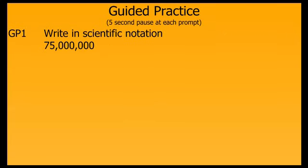Now for our guided practice section. We're going to work through some problems together — you do not need to write down these problems, just step through them with me. At each step I'll prompt you with the question you should be asking yourself, pause for about 5 seconds, then show you. For this first problem, we're trying to write the number in scientific notation. We get a number between 1 and 10 by moving the decimal point between the 7 and the 5 — that's 7 places to the left, or think of it as the 10 millionths place — giving us 7.5 times 10 to the 7th.